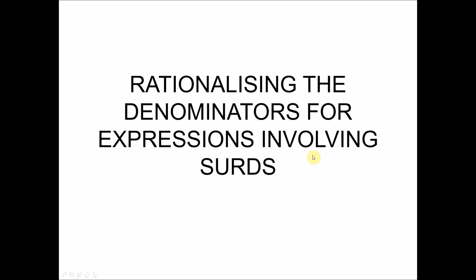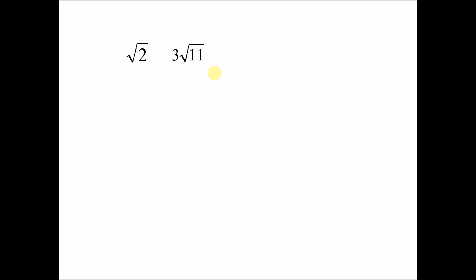We look at a few examples of surds that we've learned previously — for example, √2, or 3√11. Sometimes expressions involving surds can be like 1 over √5, where the surd is in the denominator of the fraction. This is the numerator, and this is the denominator.